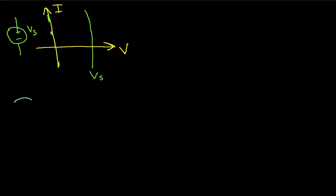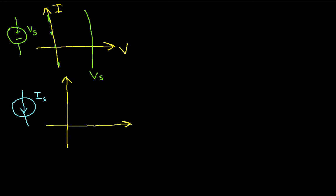Similarly, I can think about a current source where the current through the source is I sub S. If I draw its VI curve, then no matter what the voltage across my current source is, the current through it will always be I sub S. So its VI curve is a horizontal line — no matter what voltage, whether negative or zero, the current will always be I sub S.